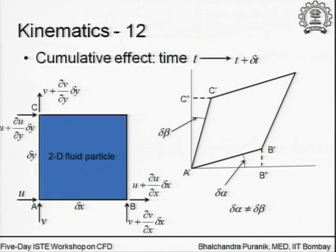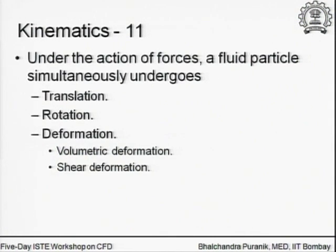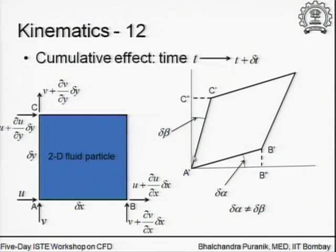The standard way of describing this situation is to show a fluid particle at a certain location at a certain time. For the sake of keeping everything manageable, I am showing a two-dimensional fluid particle with dimensions delta x by delta y — essentially the same fluid material enclosed within this volume. Under the action of forces, all these things happen simultaneously: the translation, the rotation, and the two types of deformations. At a time delta t later, the fluid particle has moved and deformed.